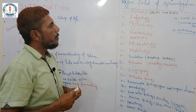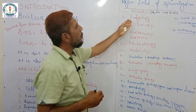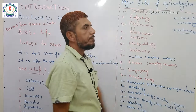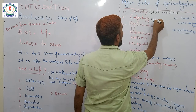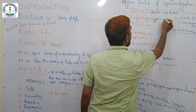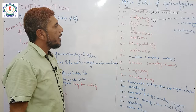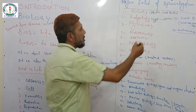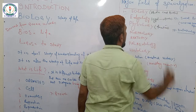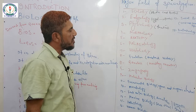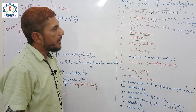Second is Embryology — the study of the embryo, where we study the different stages from zygote to fetus formation. Next is Physiology, the discipline or branch in which we study the functions of the cell. Then Morphology, which is basically the study of external structure. And Anatomy is the study of internal structure after dissection.